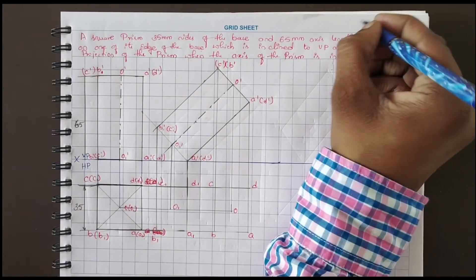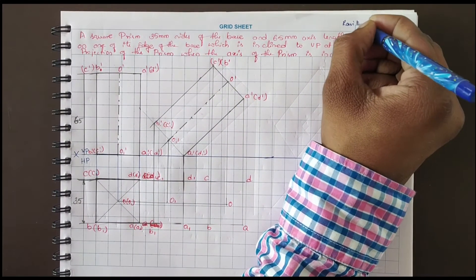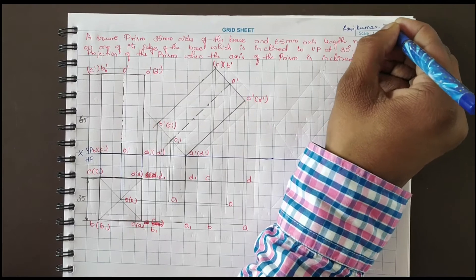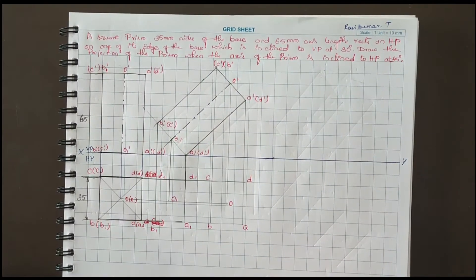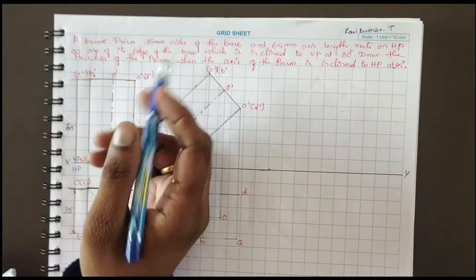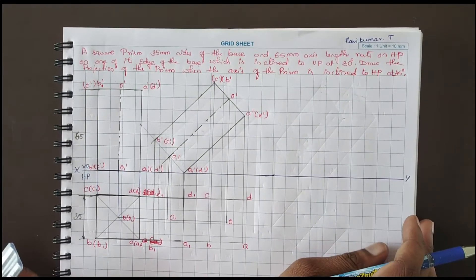My name is Ravik Kumarty, assistant professor, Department of Mechanical Engineering, SOAT, Bangor. Today I am explaining the second problem — the second problem of square prism.